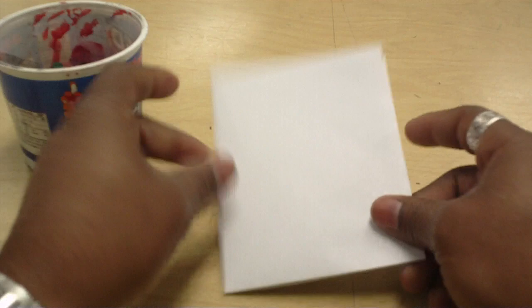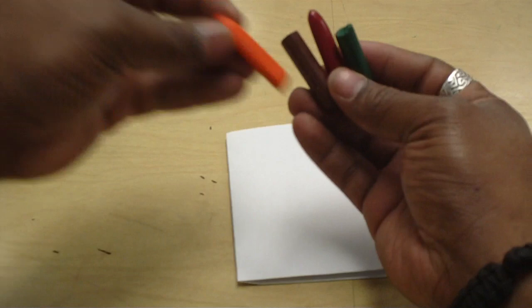Next you're going to pick your colors. I guess I'll do green, red, brown, and orange. Sounds good. All of those are fall colors. Colors that the leaves turn when it's fall.